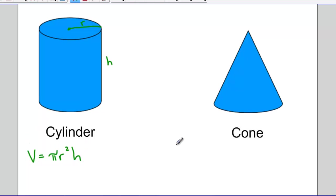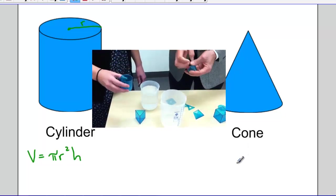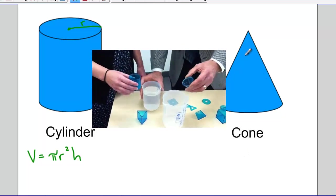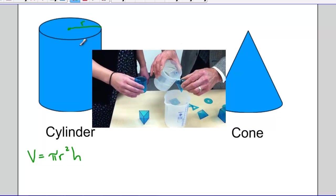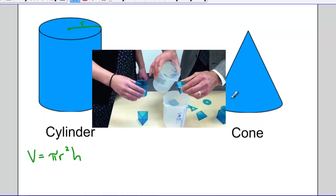How does the volume of a cylinder compare to the volume of a cone? Well, again, if we imagine taking a cone and filling it with water, and then dumping that cone into a cylinder that has the same radius as our cone.